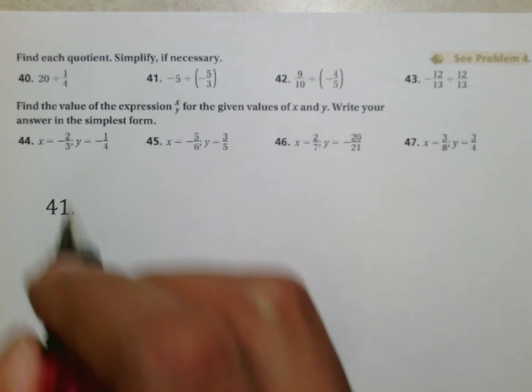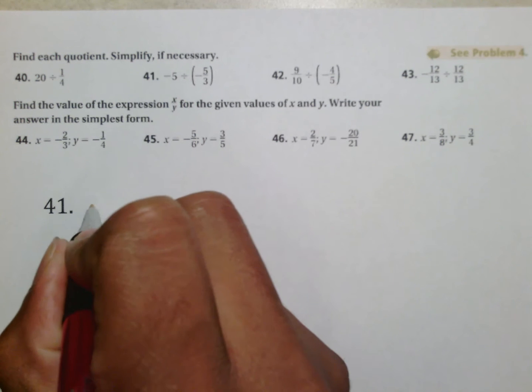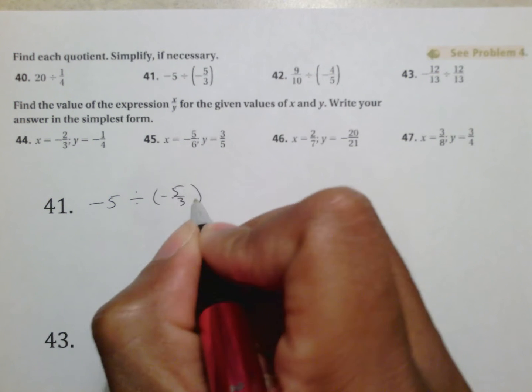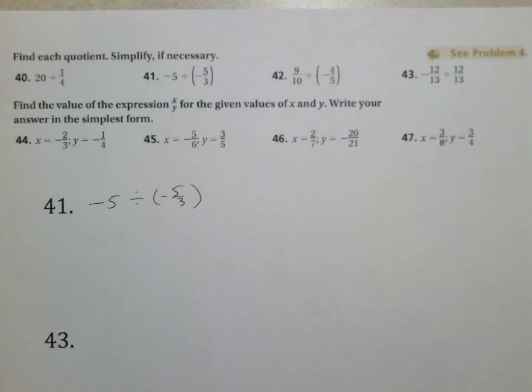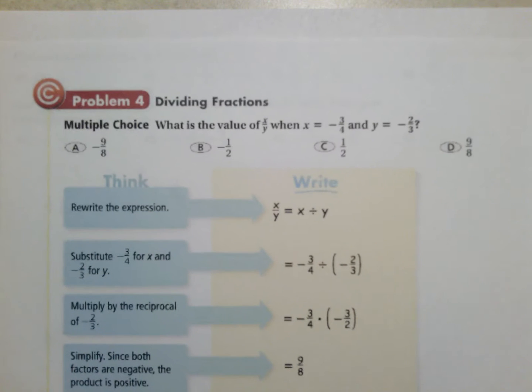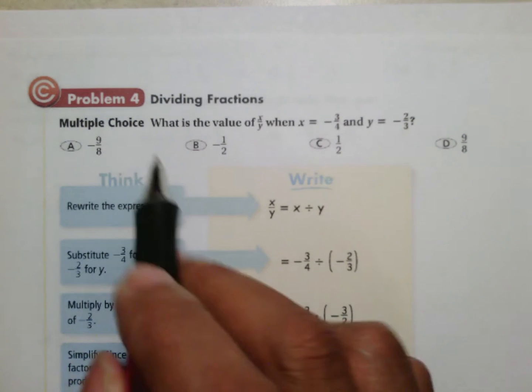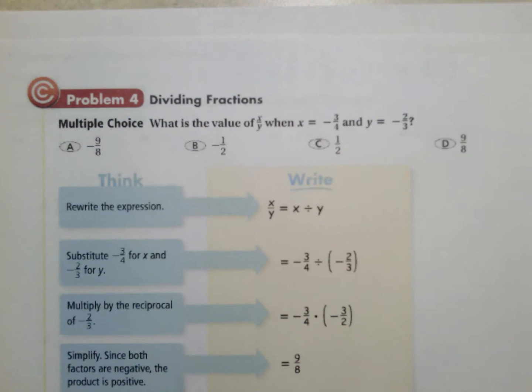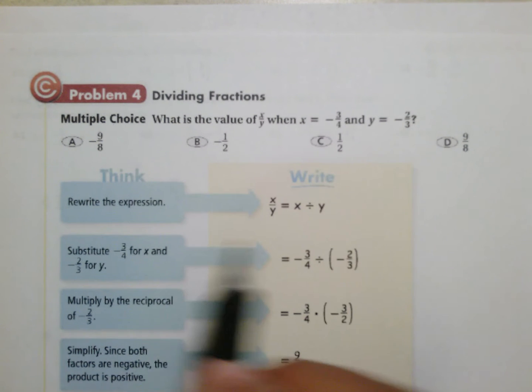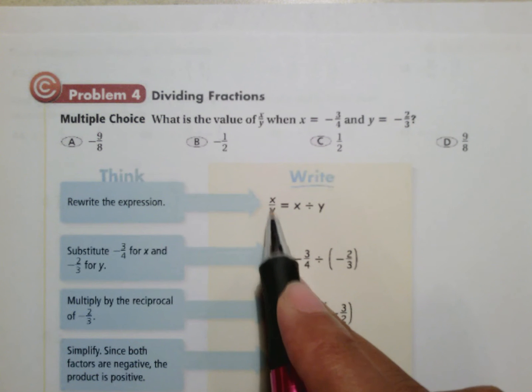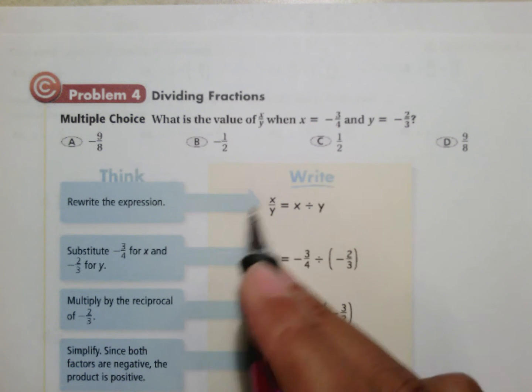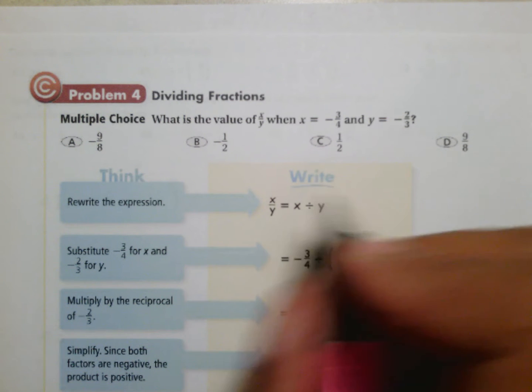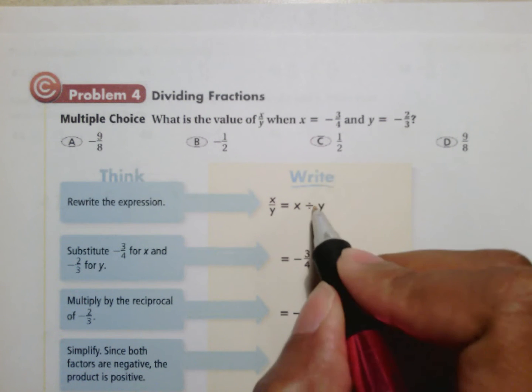It says find the quotient, simplify if necessary, so this gives me negative 5 divided by negative 5 thirds. And I haven't seen this before, so I'm going to look at problem 4. It says what is the value of x over y when x is negative 3 fourths and y is negative 2 thirds. And it tells me here rewrite the expression x over y equals x divided by y. That's kind of like what we just saw earlier when we did our division.